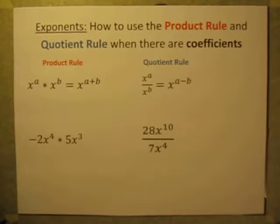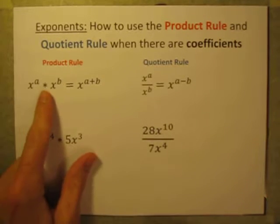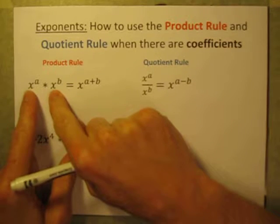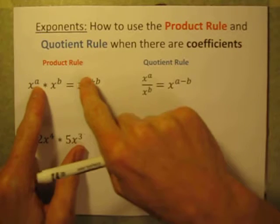The product rule, just to review, states that when you're multiplying two numbers and the bases are the same, you can just take those exponents and add them together.